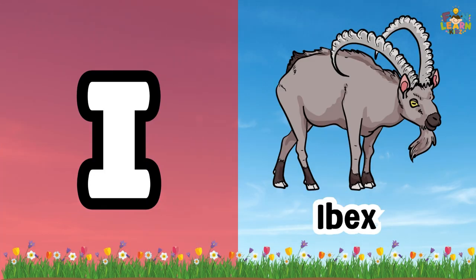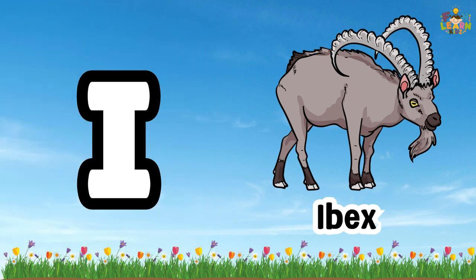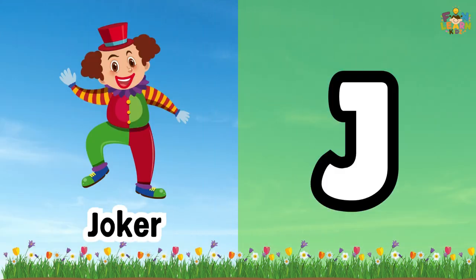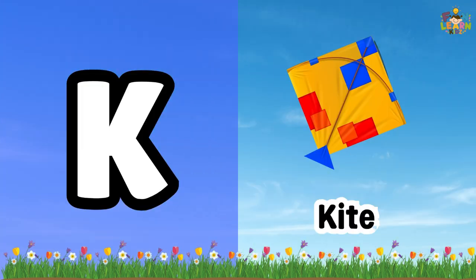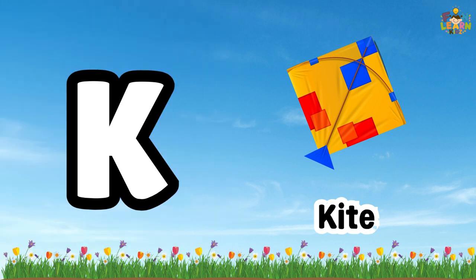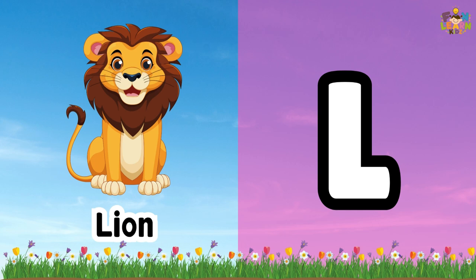I. I for ibex. J. J for joker. K. K for kite. L. L for lion.